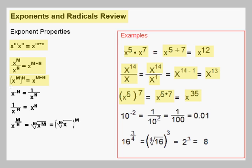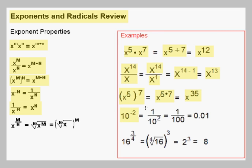The negative exponent rule basically implies to invert and use the opposite power. If we have x to the negative n, we get one over x to the positive n. Likewise, if we have one over x to the negative n, the result is x to the positive n. Here's an example: 10 to the negative 2 power is 1 over 10 to the positive 2. We invert and use the opposite power, and this equals one one-hundredth, which we could also write as the decimal 0.01.